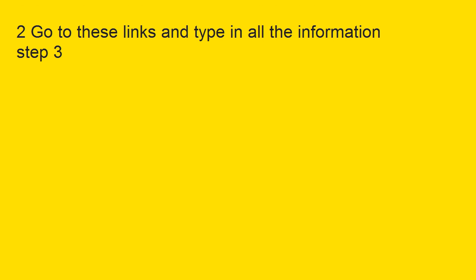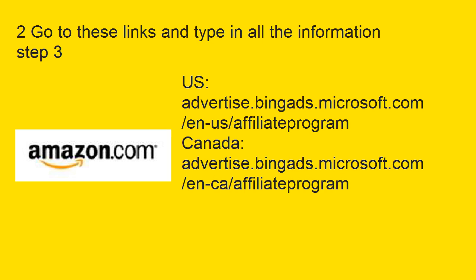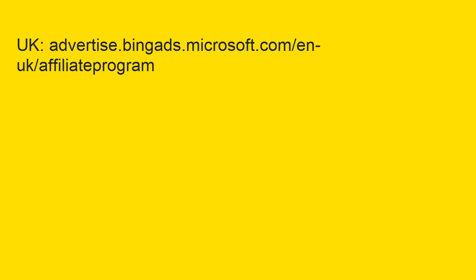Step 2: Go to these links and type in all the information. Step 3 — US: advertise.bingads.microsoft.com/en/AffiliateProgram. Canada: advertise.bingads.microsoft.com/en/AffiliateProgram. UK: advertise.bingads.microsoft.com/en/AffiliateProgram.